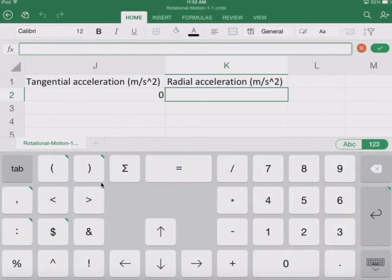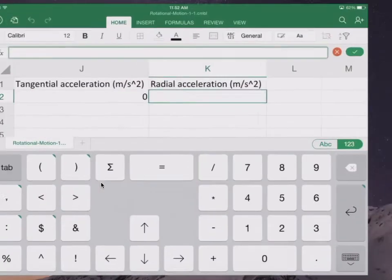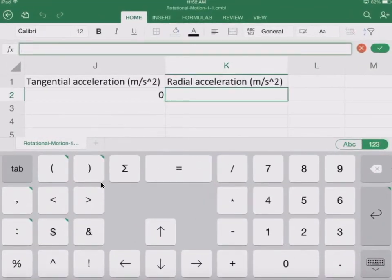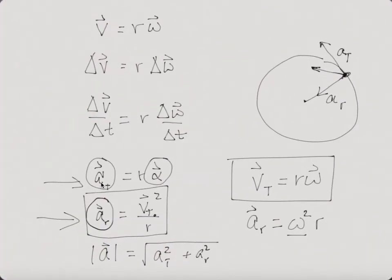And then radial acceleration, according to the theory, is going to be the tangential velocity squared over r. We already have that information. Or it's the angular acceleration squared times r. We have that information as well.